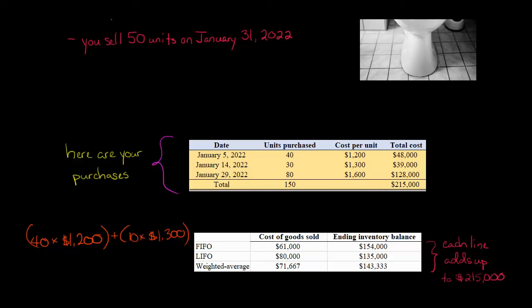Another way you could calculate the ending inventory balance is you could say, well, there's 20 of these units, 20 of those 30 remaining in inventory, so 20 times $1,300, plus the 80 times $1,600. So basically the units that have not been expensed yet, have not yet flown through cost of goods sold.